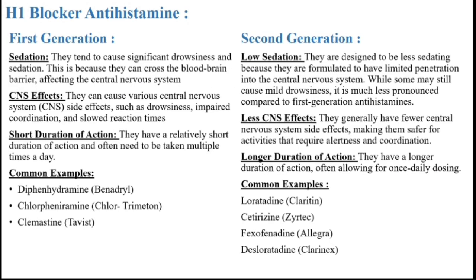H1 blocker antihistamines are classified into two types: first generation and second generation. The first generation tends to cause significant drowsiness, whereas second generation antihistamines are designed to be less sedating because they are formulated to have limited penetration into the central nervous system, thus showing fewer CNS side effects. Common examples of first generation are diphenhydramine, chlorpheniramine, and clemastine. Common examples of second generation are cetirizine, loratadine, etc.